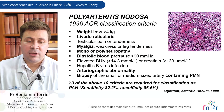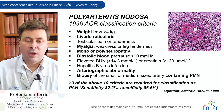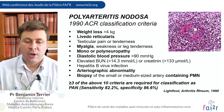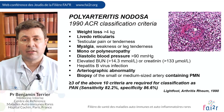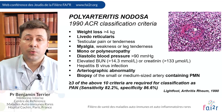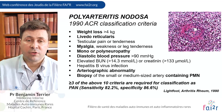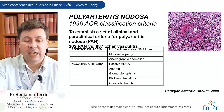The presence of weight loss, livedo reticularis, peripheral nerve involvement, high diastolic blood pressure, or arteriographic abnormalities were highly suggestive of polyarteritis nodosa. If you had at least three of these criteria, you had good sensitivity and specificity for the diagnosis of PAN.